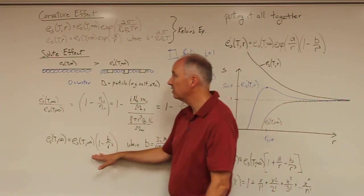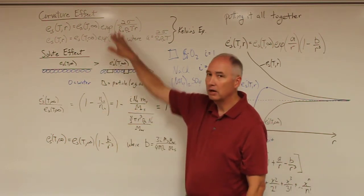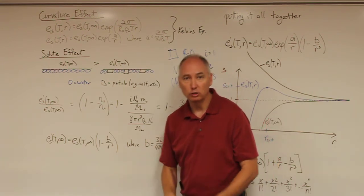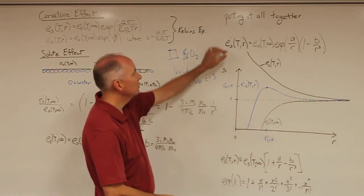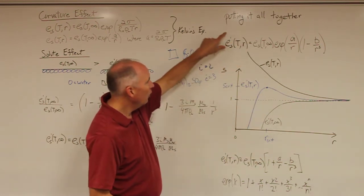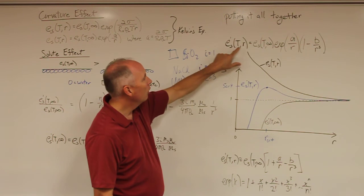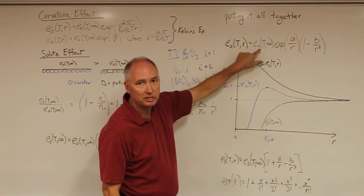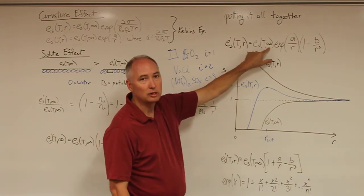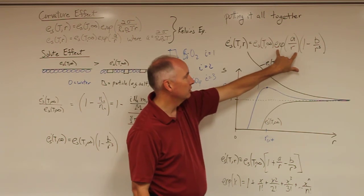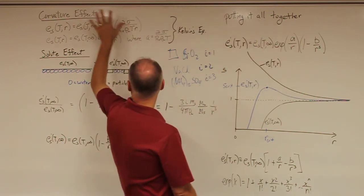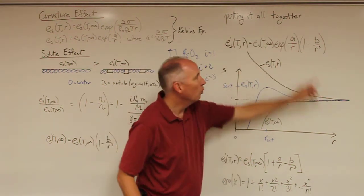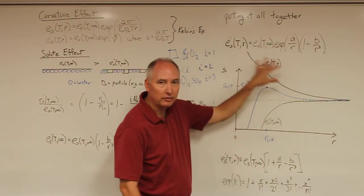We can now take this solute effect and combine it with the curvature effect to give the saturation vapor pressure over a curved surface of a solution droplet, which is what we actually have in the atmosphere. Putting it all together, the saturation vapor pressure over a curved surface that is a solution droplet equals the saturation vapor pressure of pure water over a plain surface, times a correction factor for the curvature effect — the exponent of A over R — times a correction factor for the solute effect, 1 minus b over r cubed.